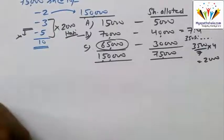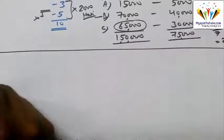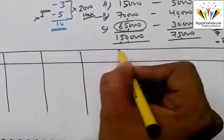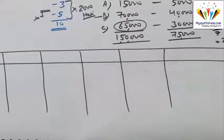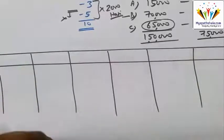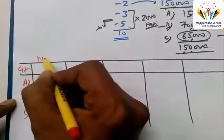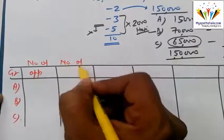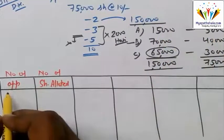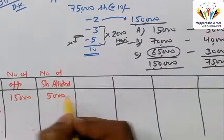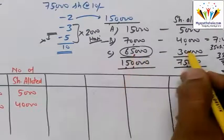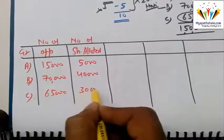Now we need to make the table. There are three groups: A, B, and C. Number of applications and number of shares allotted: 15,000 applications for 5,000 shares; 70,000 applications for 40,000 shares; and 65,000 applications for 30,000 shares.